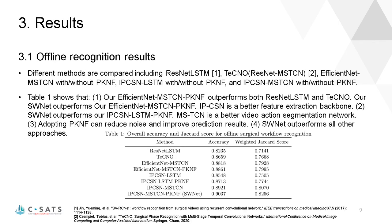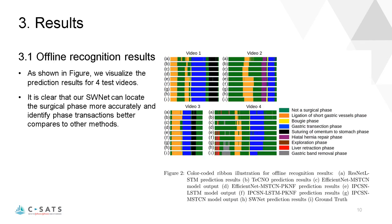For offline recognition results, different methods are compared including ResNet LSTM, TECHNO, EfficientNet MSTCN with or without PKNF, IPCSN LSTM with or without PKNF, and IPCSN MSTCN with or without PKNF. The test results show that IPCSN is a better feature extraction backbone compared to EfficientNet and ResNet, and MSTCN is a better temporal action segmentation network compared to LSTM. Adopting PKNF can reduce noise and improve prediction results. Our SWNet outperforms all other approaches. As shown in the figure on the right, we visualize the prediction results for four test videos, showing that SWNet can locate the surgical phase more accurately and identify phase transitions better compared to other methods.